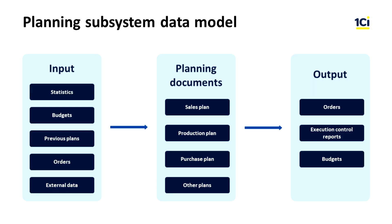The planning subsystem in 1C ERP supports coordinated work of enterprise departments to plan and execute sales and operations plans. It helps to create sales and operations plans based on statistics, budgets, previous plans, customer and production orders, or external sources. Based on the plans, you can create purchase, production, or transfer orders, perform plan-fact analysis, and use planning data in budgeting.